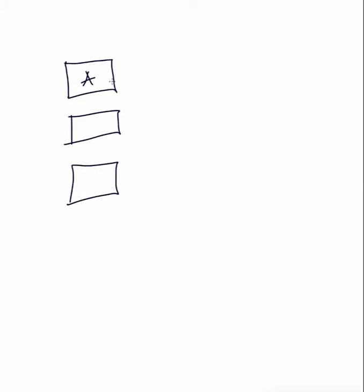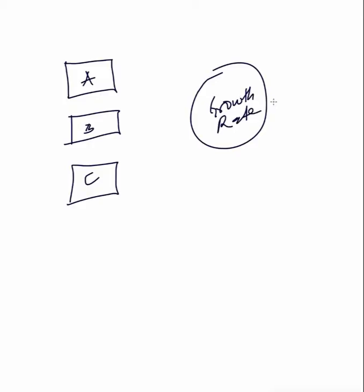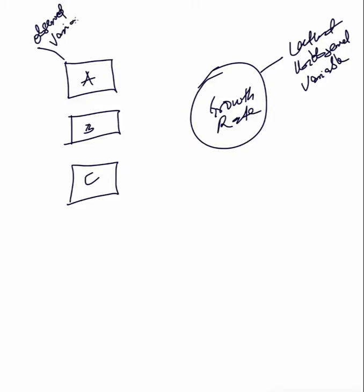Let's assume you have four questions in your questionnaire trying to measure one thing. This is question A, question B, question C — trying to measure maybe your growth rate. This is the latent variable or unobserved variable. These are the observed variables. Remember, the observed variables — your questionnaire items — are indirectly measuring the unobserved or latent variable.